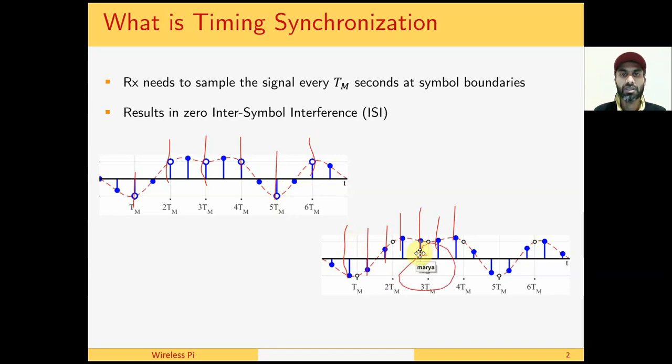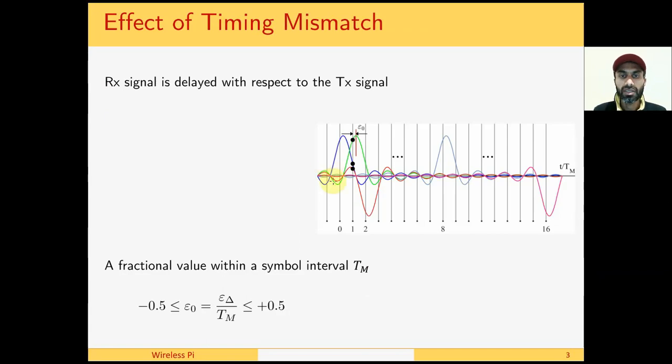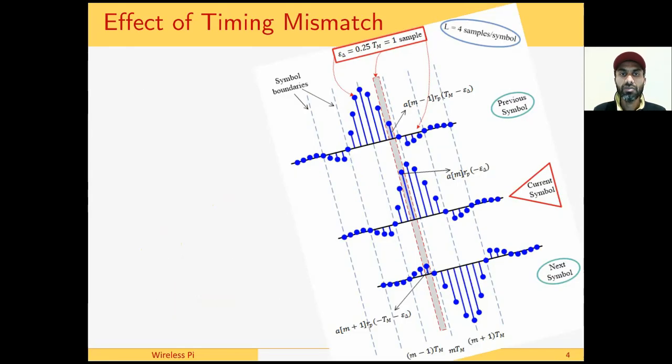From the perspective of our receiver, the signal is delayed, hence there is a timing phase offset between the peak of the pulse and the actual location where the ADC has sampled the waveform, which is called timing offset. Usually we say that the timing offset lies between minus 0.5 symbol time to plus 0.5 symbol time, and in normalized terms we say it is from minus 0.5 to 0.5. Let us see what the effect of timing mismatches on the received signal.